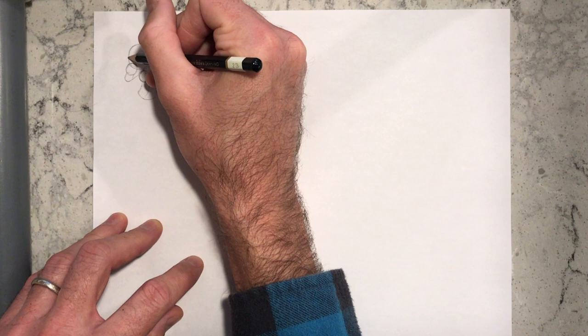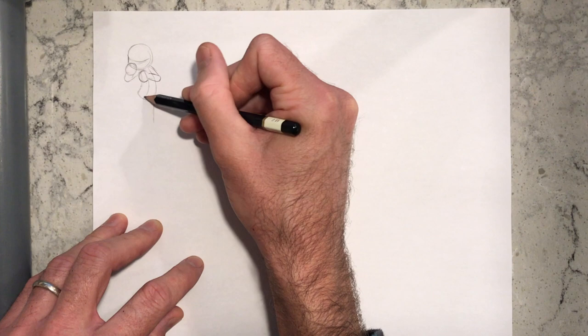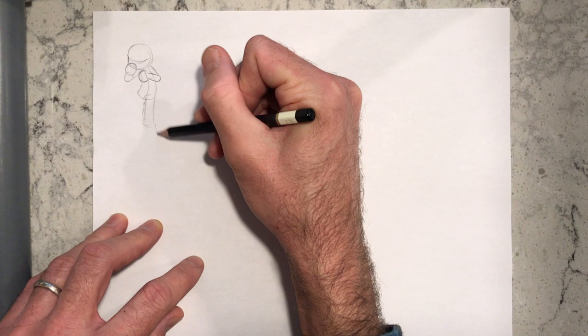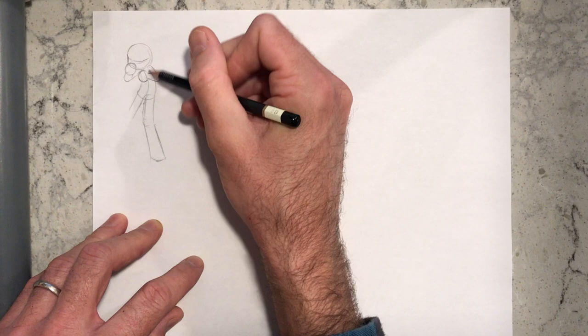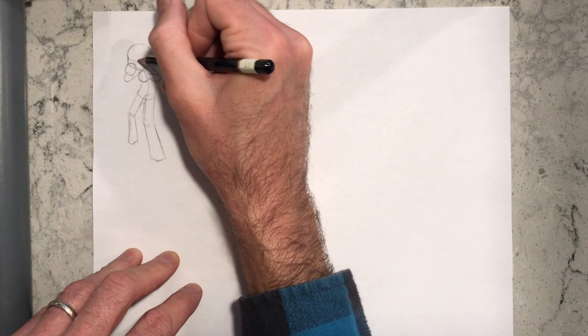This first pose is kind of like a get ready for fighting pose. You have both fists in a ready position, one leg forward and one leg a little bit further back, with a serious expression.